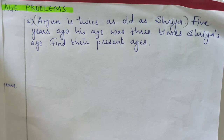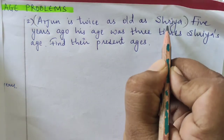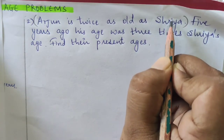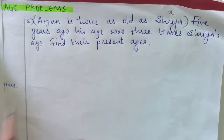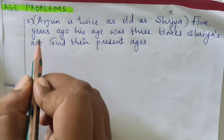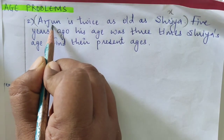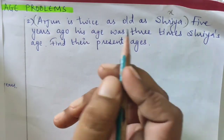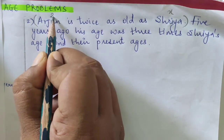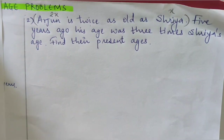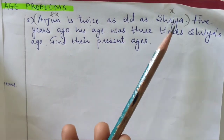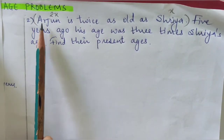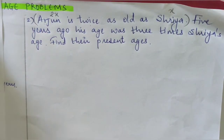Since we do not know Shriya's age, we take her age as x years. Then Arjun's age is 2 times Shriya's age, so it becomes 2x. Let the present age of Shriya be x years and let the present age of Arjun be 2x years.